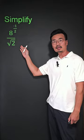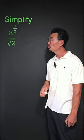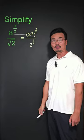In order to combine the numerator and the denominator, we want to change that 8 into base of 2, where 8 becomes 2 to the third power.